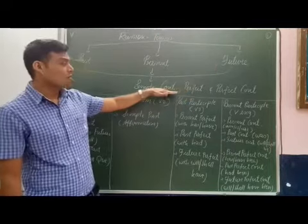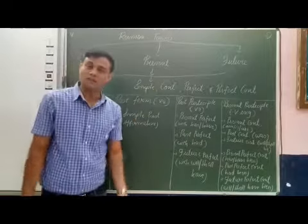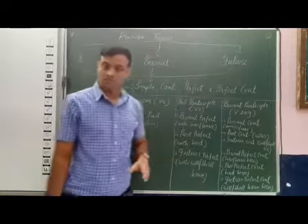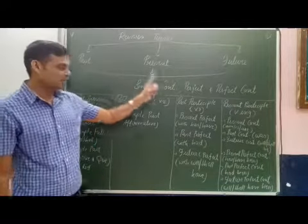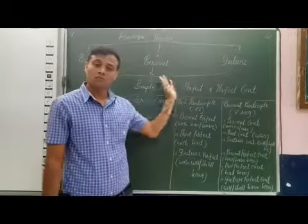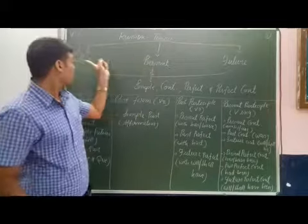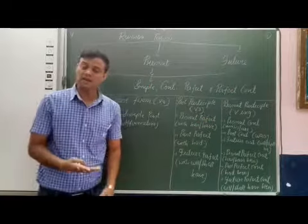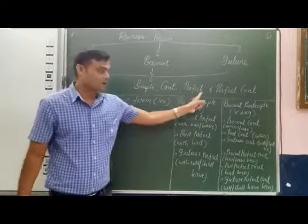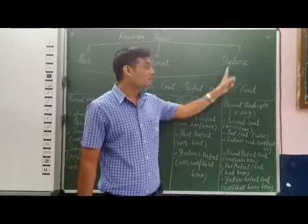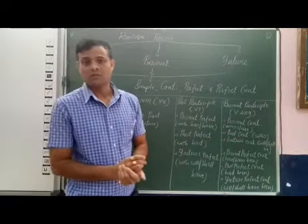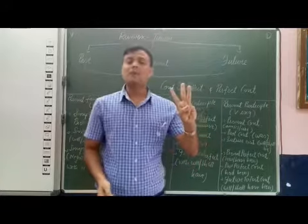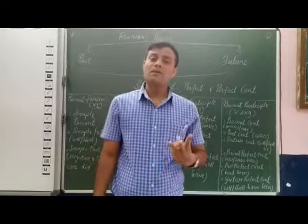They are further divided into four categories. First, simple — so three simple: simple past, simple present, simple future. Three continuous: past continuous, present continuous, and future continuous. Three perfect: past perfect, present perfect, and future perfect. And three perfect continuous. Past perfect continuous — so total twelve tenses.